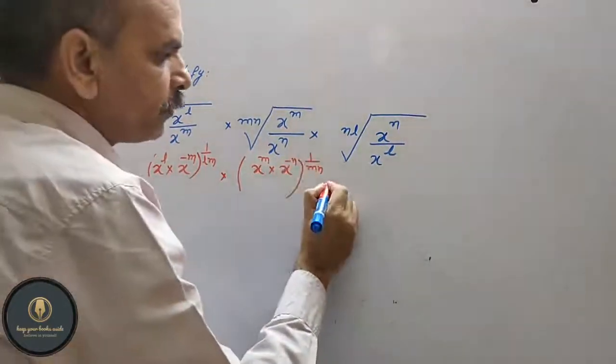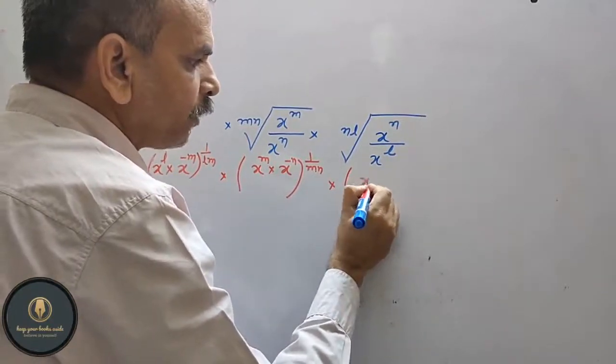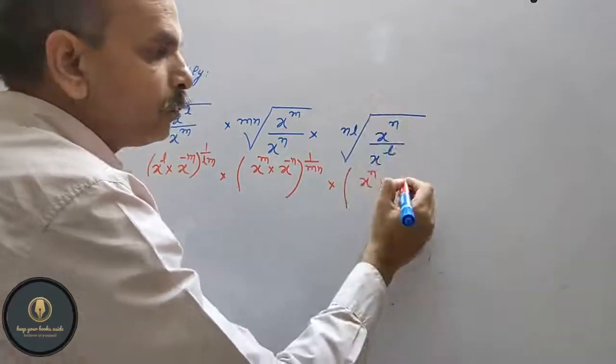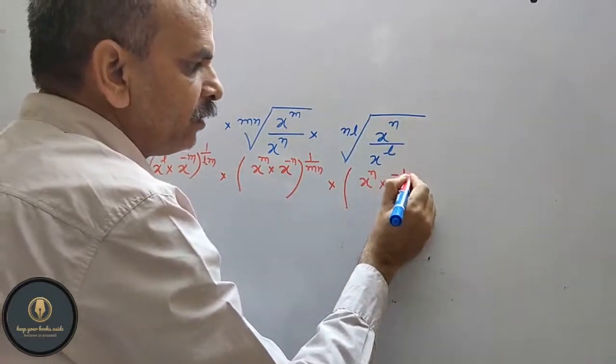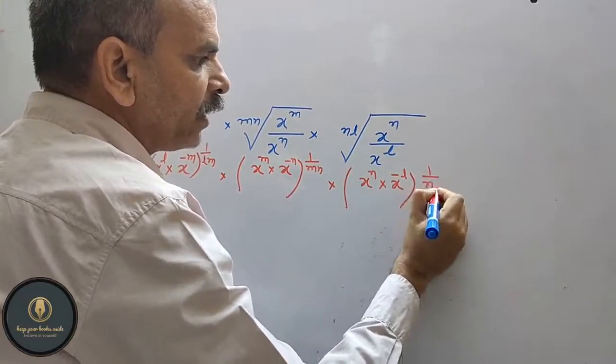The third one we do the same. We get x to the power of n into x to the power of minus l, and whole to the power of 1 by nl.